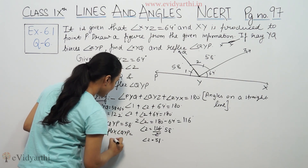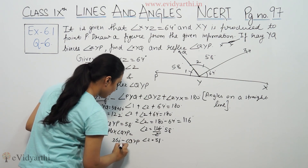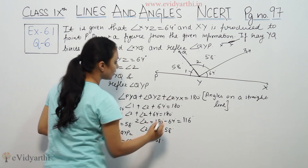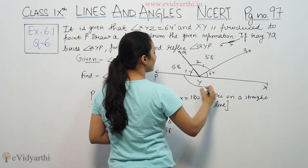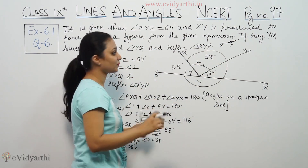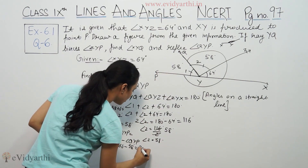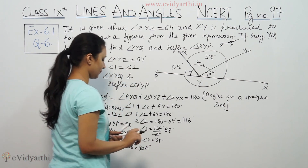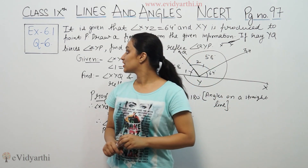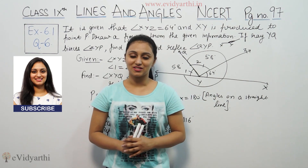Reflex angle QYP equals 360 degrees minus angle QYP. So reflex QYP equals 360 minus 58, which gives us 302 degrees. This was the question from exercise 6.1. Do watch the next video for more questions. Goodbye.